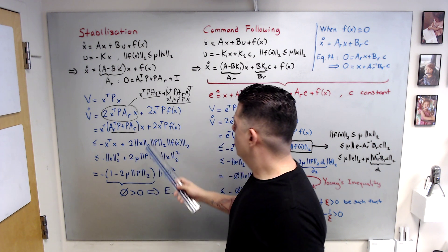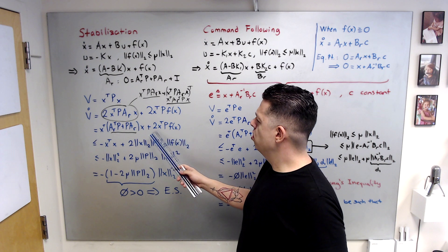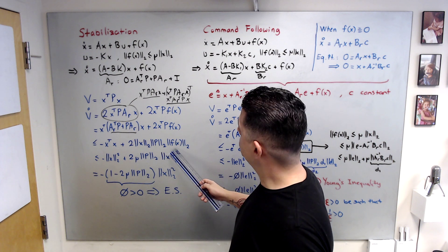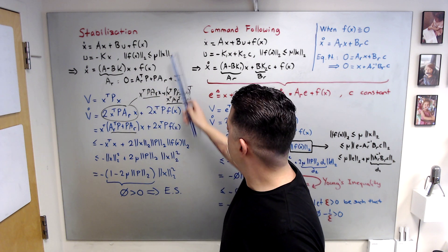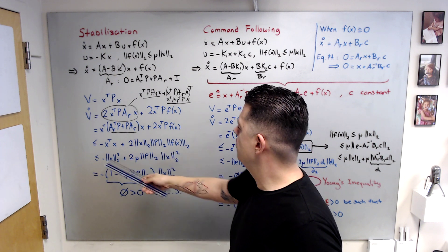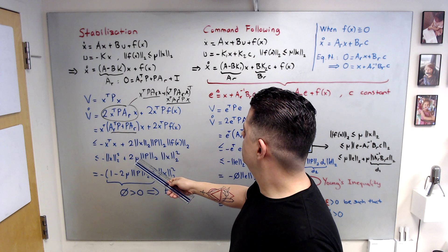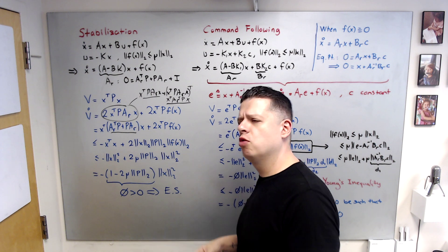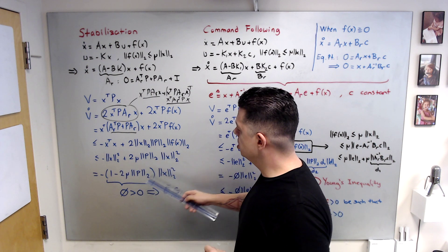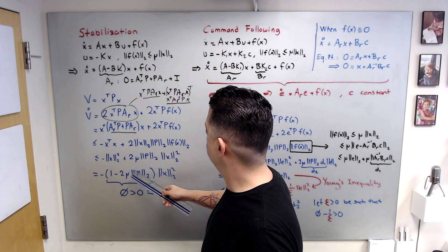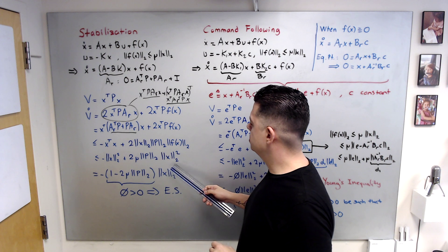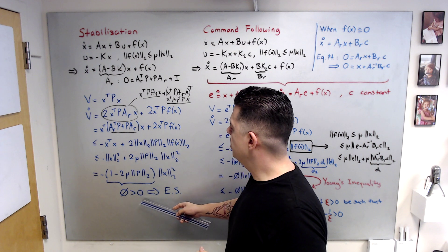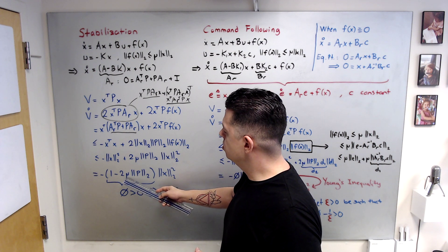Inserting the linear growth inequality into the equation, we obtain: minus norm(x)^2, this term multiplied by norm(x)^2. Looking at the structure, you have minus (1 - 2*mu*norm(P)) multiplied by norm(x)^2. To claim exponential stability, this coefficient must be positive definite.